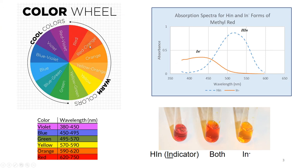Let's look at some colors using a color wheel. When a molecule absorbs green light, it appears red. When a molecule absorbs violet light, it appears yellow. This is why methyl red looks red — it absorbs green light. Looking at the absorbance spectrum, HIn, the acidic form of methyl red, has maximum absorbance around 520 nanometers, which is green light. Therefore it appears red.